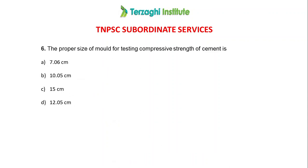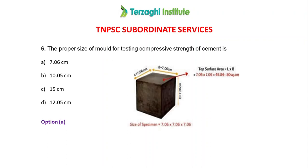Next question: the proper size of mold for testing compressive strength of cement. The cube mold has one dimension — length, width, and depth are all equal. The standard cube mold size is 7.06 cm. The answer is 7.06 cm.